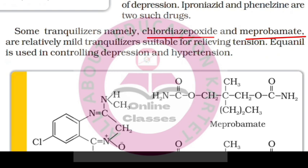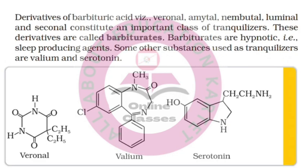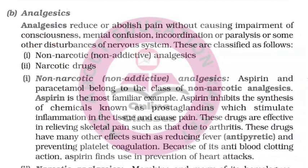Derivatives of barbituric acid — veronal, amital, nembutal, luminal, and seconal — constitute an important class of tranquilizers called barbiturates. Barbiturates are hypnotic, meaning sleep-producing agents. Examples include veronal, valium, and serotonin-related tranquilizers.